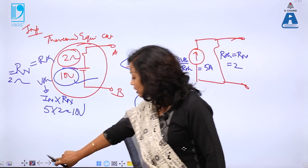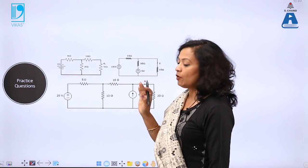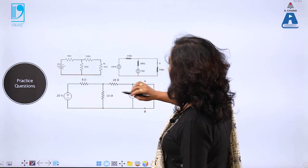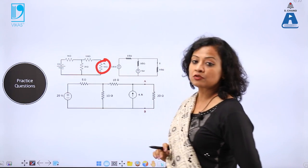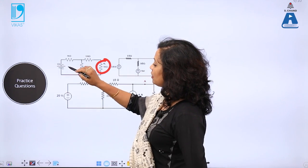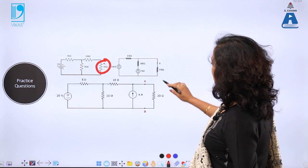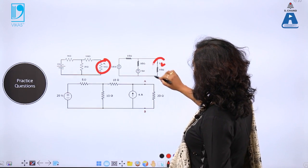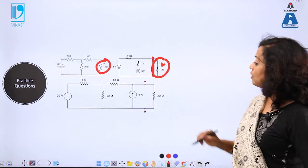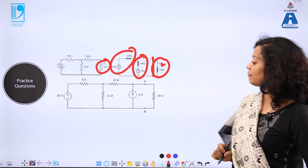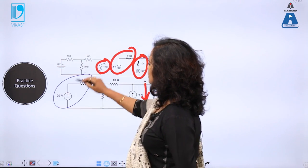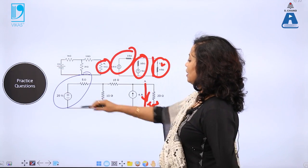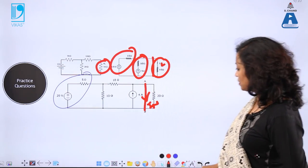You can also cross-check results if you are not confident with one method. For practice questions — using the same circuit solved in Thevenin's theorem — remove the load resistance, short-circuit the terminals, and find the current in the short circuit to get I_Norton. For R_Norton, short-circuit all voltage sources and find R_Norton as seen from the terminal. You can use source transformation since components are in series or parallel, and keep applying source transformation steps until you finally get I_Norton.